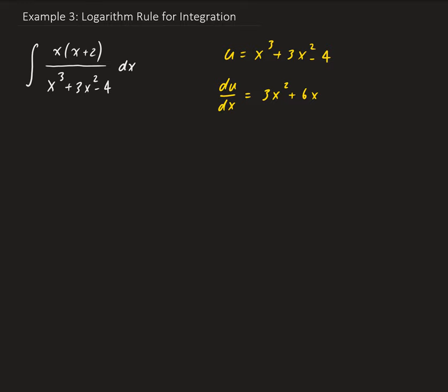If we notice something here — if we look in the numerator of our function, we have x times x plus 2, which is equal to x squared plus 2x. That's what we have in du/dx, so this is going to be a multiple of 3. In other words, du is equal to 3 times x squared plus 2x. By factoring out 3, we can see that we have x squared plus 2x in our numerator.